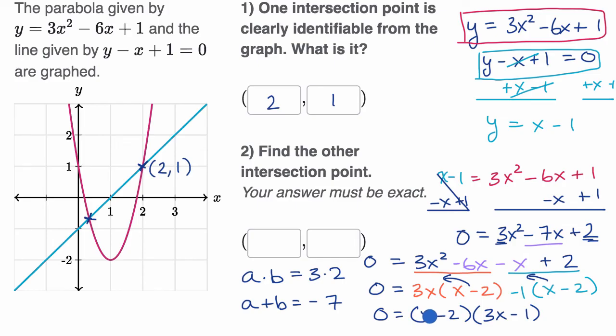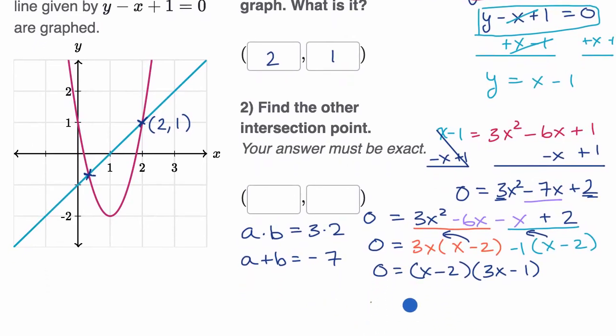And so, a solution would be a situation where either of these is equal to zero. So x minus two could be equal to zero, or three x minus one is equal to zero. The point at which x minus two equals zero is when x equals two. And for three x minus one equals zero, add one to both sides, you get three x equals one, or x equals one third.